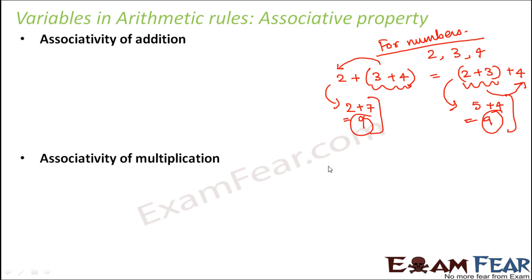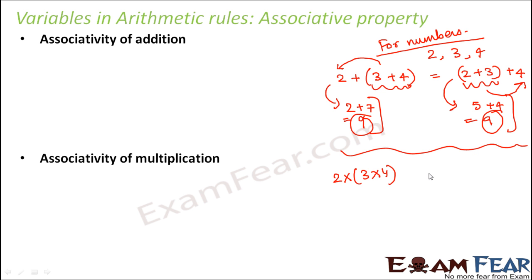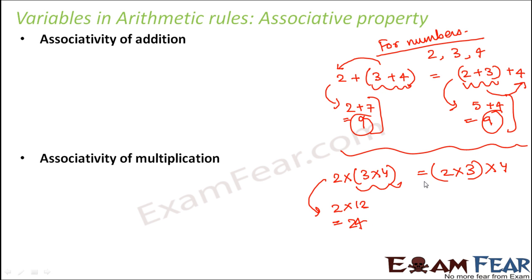Similarly, in case of multiplication also, it says more or less the same thing — just that addition is replaced with multiplication. If you have three numbers 2, 3 and 4, then 2 into (3 into 4) is equal to (2 into 3) into 4. First you find the product of the second and third number and then multiply by 2. This becomes 2 into 12 which equals 24. On the other side, it is 6 into 4 which is also equal to 24.